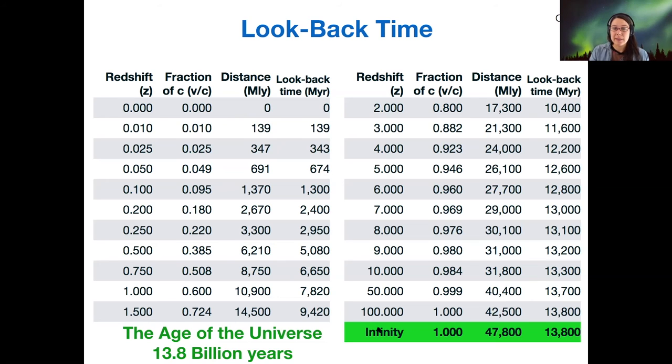In order to make these calculations correctly, you need to use either a relativistic version of the Doppler shift equation, or even better, models that have other parameters. We're not going to get into the details of that, but that's why we use tables like this to find look-back time.